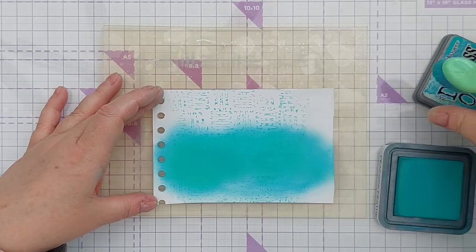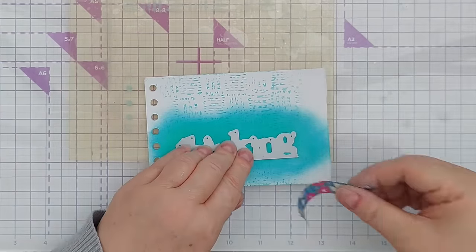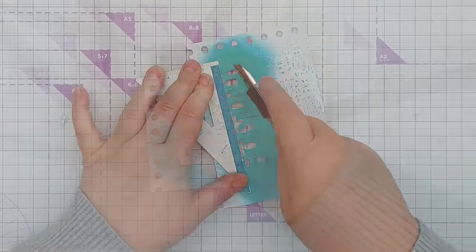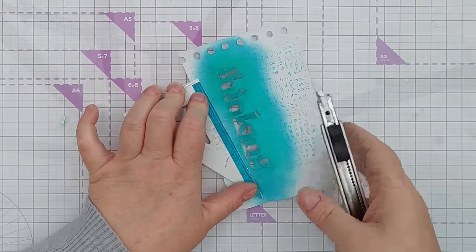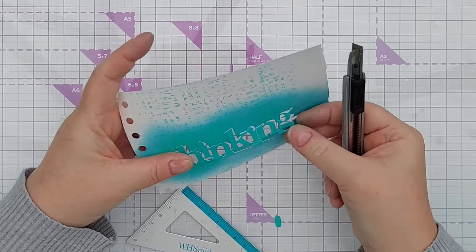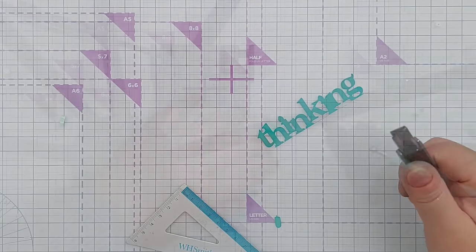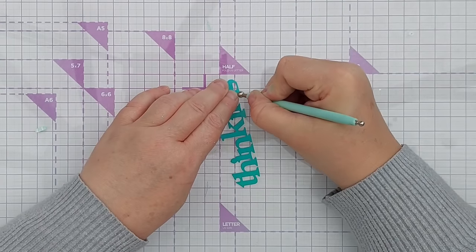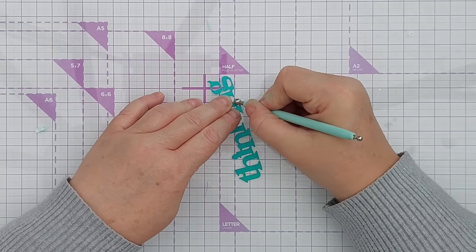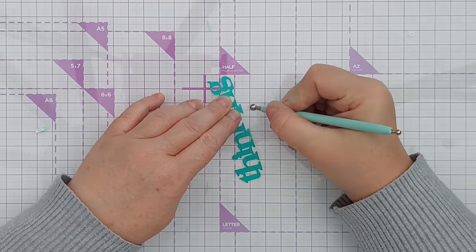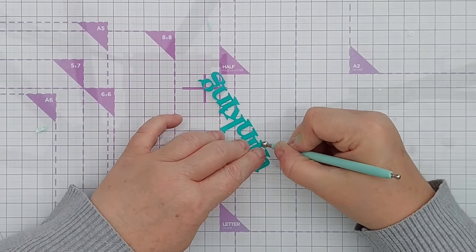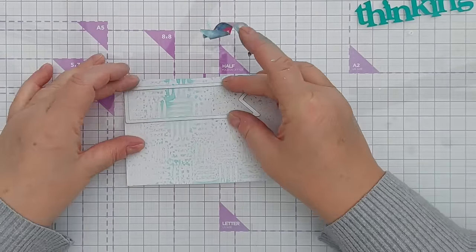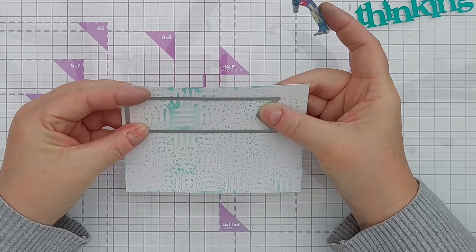After that I ran my bit of paper through the die cutting machine with the thinking die but this time I sliced all the way along the bottom of the word so that I could use the word on its own without the bit of paper at the bottom. To make it look like the whole thing had been die cut rather than sliced, I ran my embossing tool along the cut edge again and then I bevelled the edges.